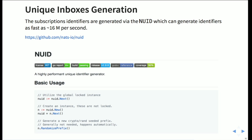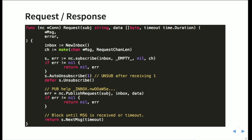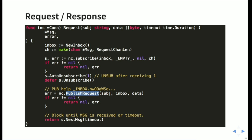For generating unique inboxes, there is a library named NUID — very performant, capable of generating identifiers at around 16 million per second. The request/response implementation works roughly as follows: we make a new inbox, make a subscription on that inbox using the auto-unsubscribe API to limit interest, broadcast using publish-request — which publishes on the subject with the reply inbox — and then block. There is also a context variation for the same request API, giving us two APIs for blocking request/response.